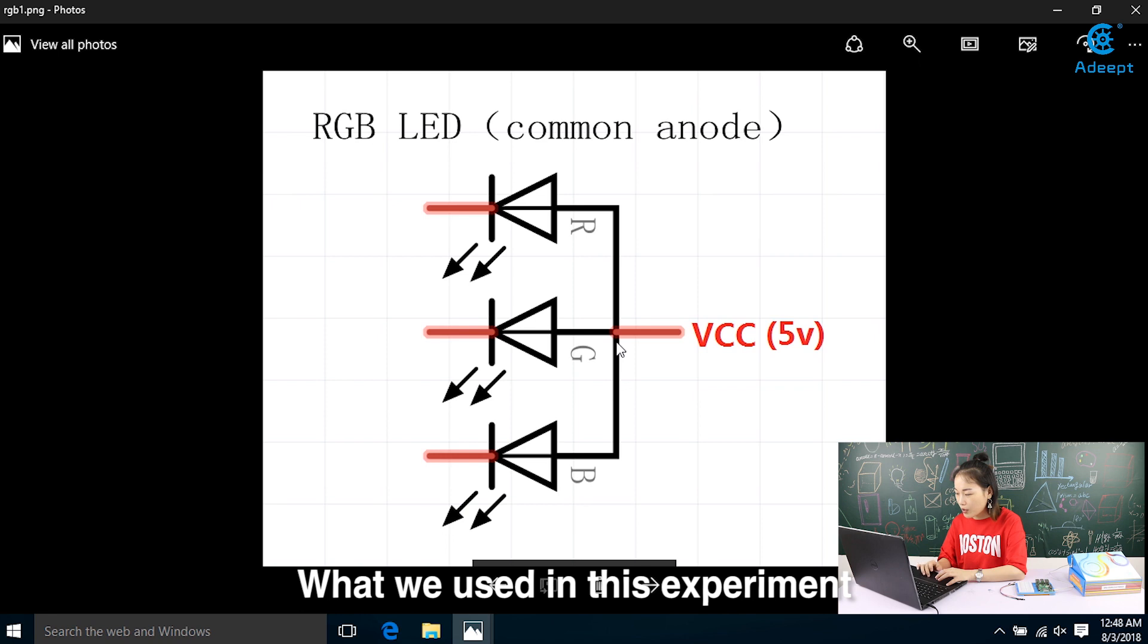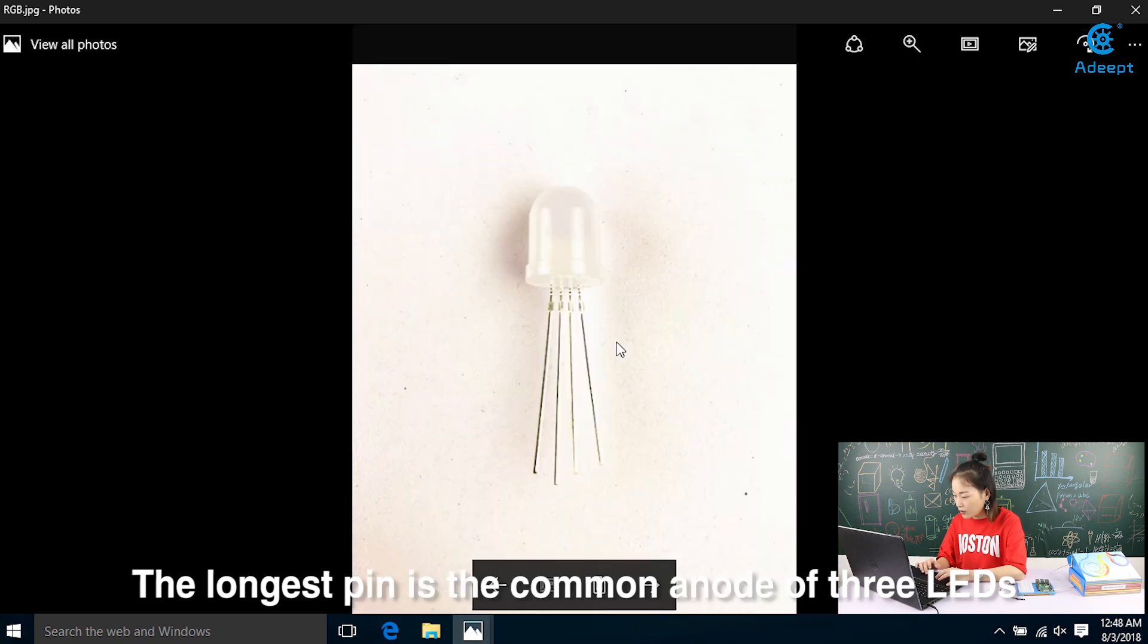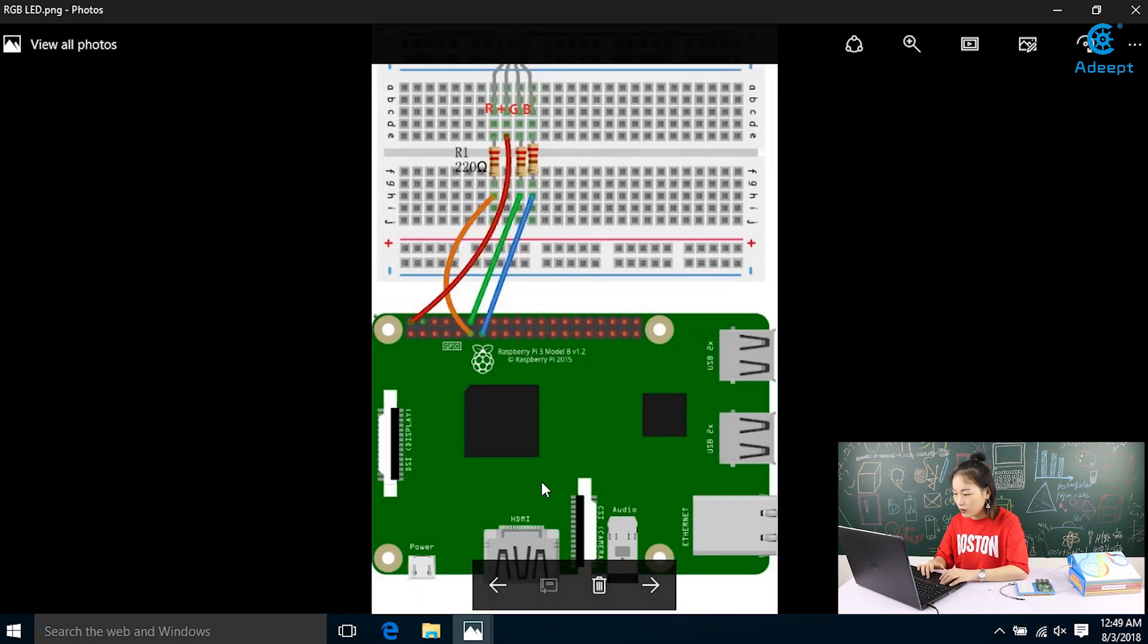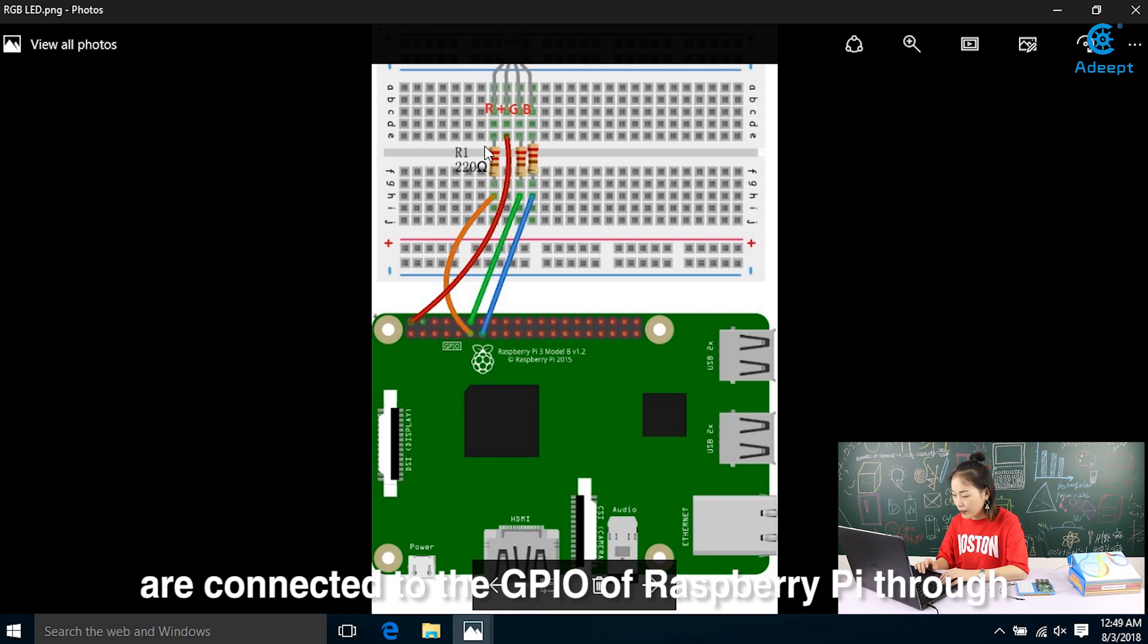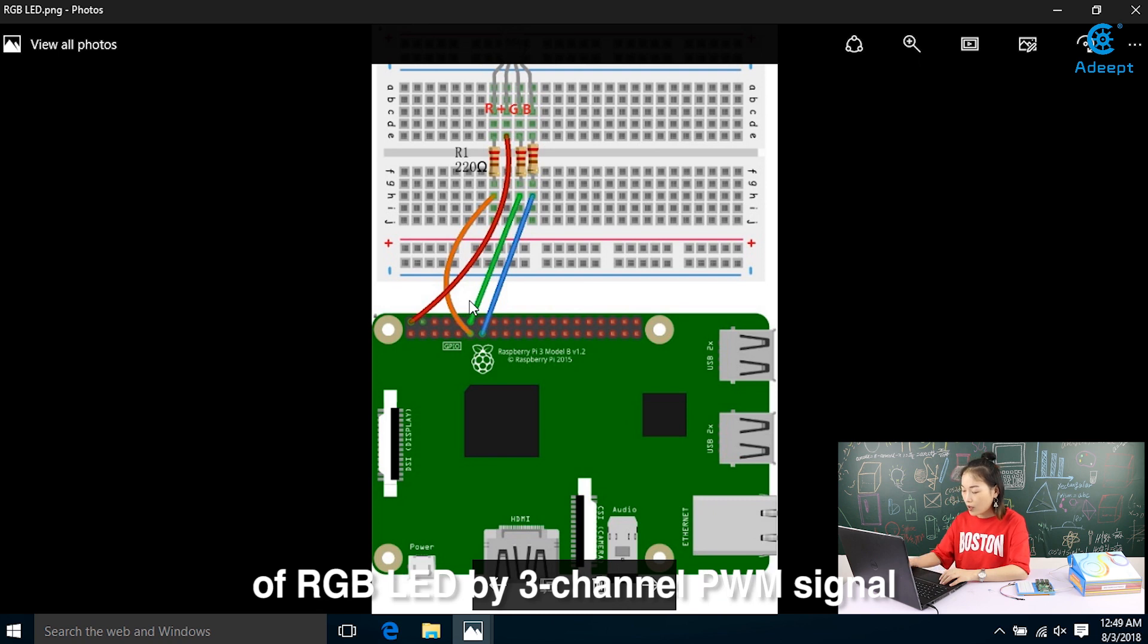What we use in this experiment is a common anode RGB LED. The longest pin is a common anode of 3 LEDs and is connected to the port 5V of the Raspberry Pi. And the 3 remaining pins are connected to the GPIO of the Raspberry Pi through a 220 ohm resistor. In this way, we can control the color of RGB LED by 3 general PWM signals.